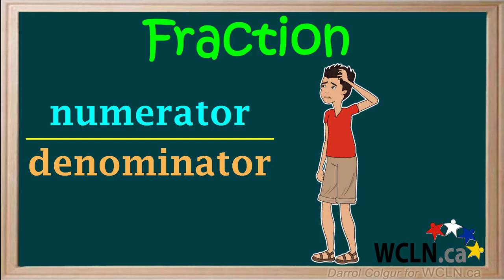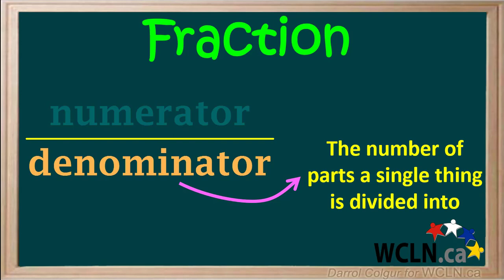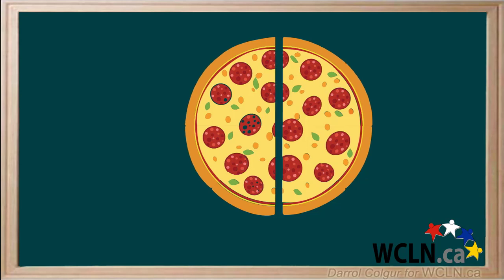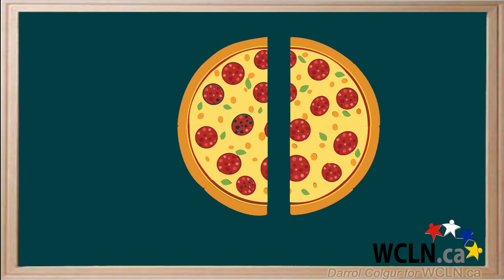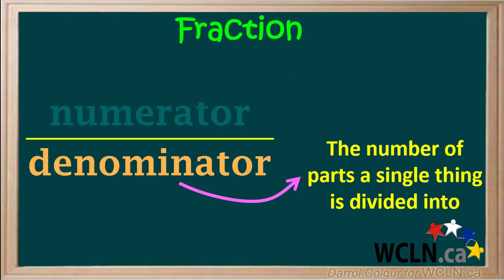But what do these things mean? The denominator is the number of parts a single thing is divided into. Let's say we have a whole pizza and we divide it into two parts. Here we can write a fraction for which the denominator is two, because the pizza is divided into two parts. To review, the denominator is the number of parts a single thing is divided into.